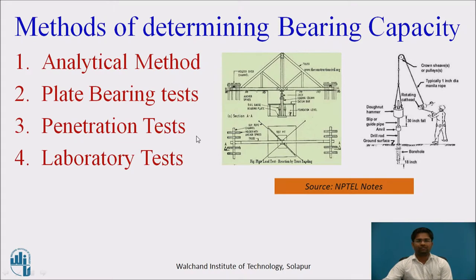The penetration test has two sub-methods to determine SBC of soil: the SPT (Standard Penetration Test) and the DCPT (Dutch Cone Penetration Test). By using the N value — the number of blows — we calculate the SBC of the soil sample. In this test, a person applies an impact force on a vertical rod.